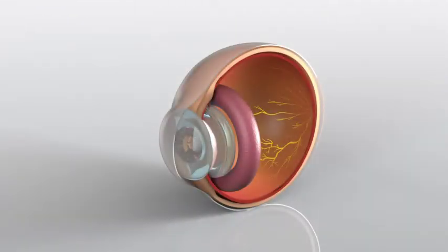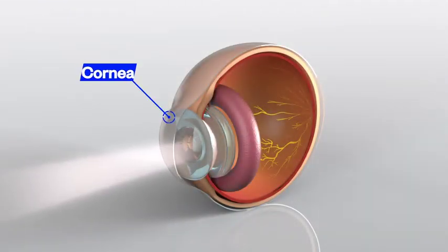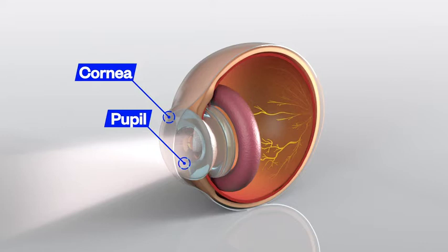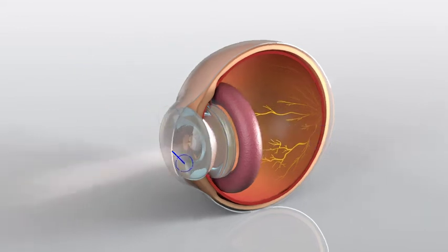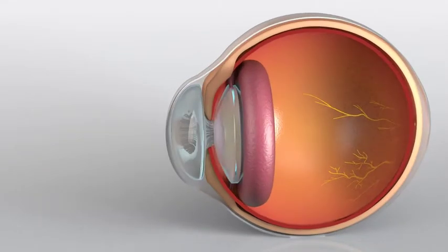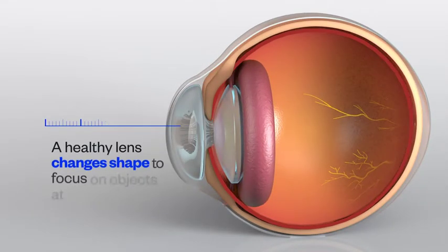When you look at an object, light passes through your cornea and into your pupil, the hole in the colored part of your eyes. It travels through your lens and focuses the light precisely on a point on your retina, the light-sensitive lining at the back of your eye. Much like adjusting the focus on a camera, a healthy lens flexes and changes shape to focus on objects at different distances.